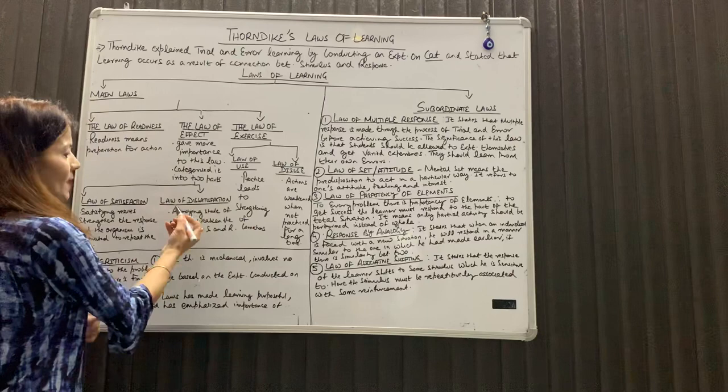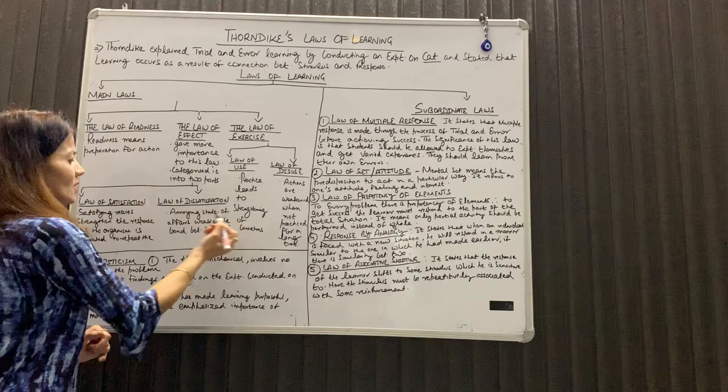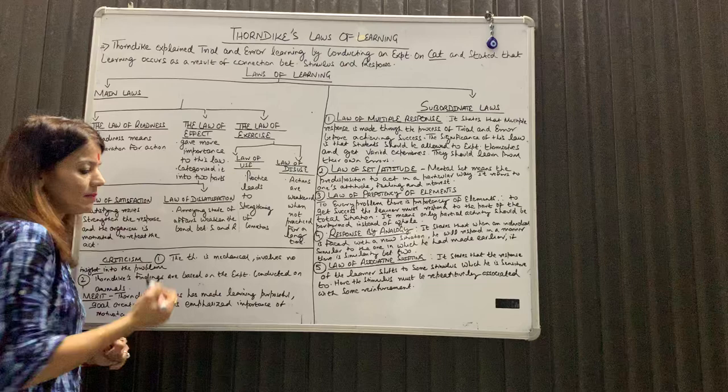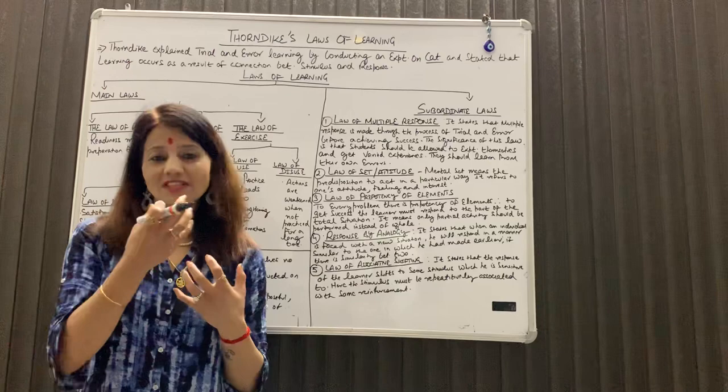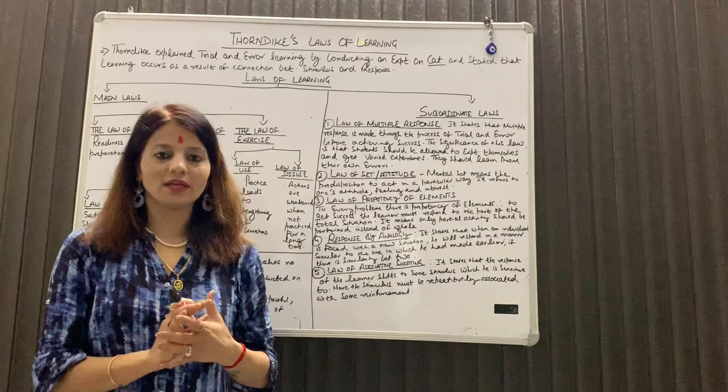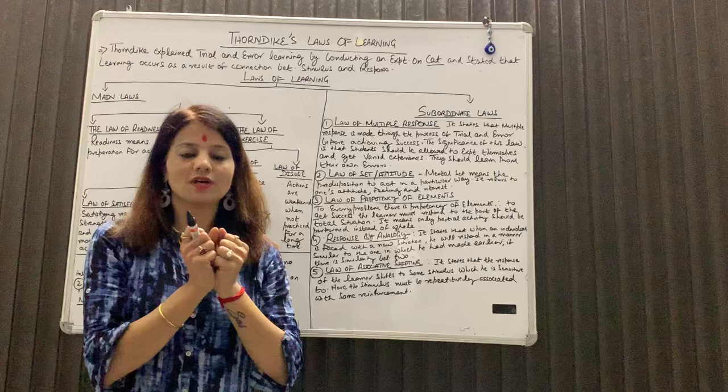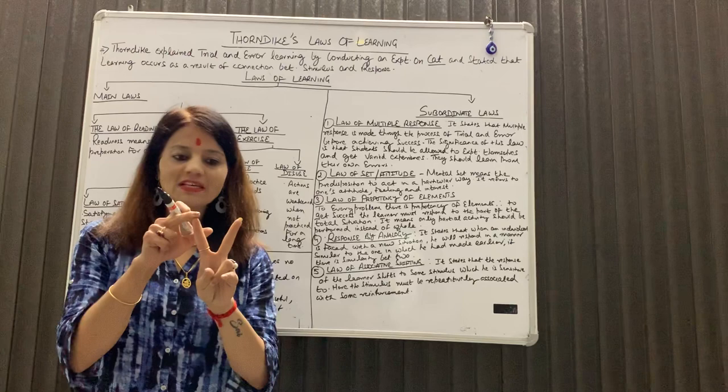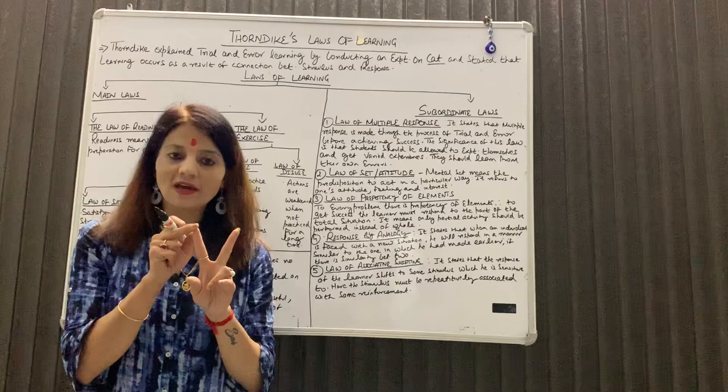Law of effect का दूसरा part है law of dissatisfaction. An annoying state of affairs weakens the bond between stimulus and response. Thorndike का ये मानना था कि यदि किसी कार्य में हमको annoying state face करनी पड़ती है या हमें dissatisfaction मिलता है, तो हम उस कार्य को avoid करते हैं, और stimulus और response की bonding weaken हो जाती है. Basically, हम वही कार्य करना चाहते हैं जिसमें हमें satisfaction मिलता है, और उस कार्य को avoid करना चाहते हैं जिसमें हमें dissatisfaction मिलता है.